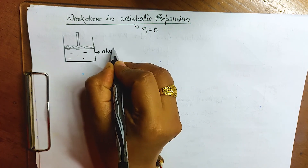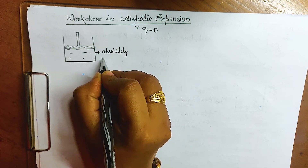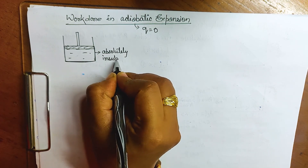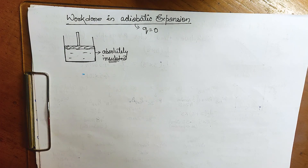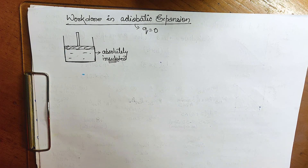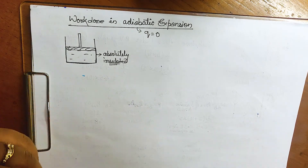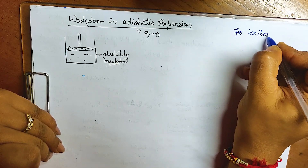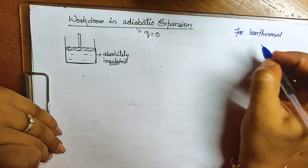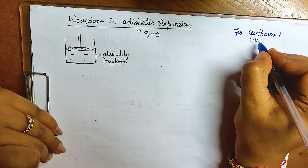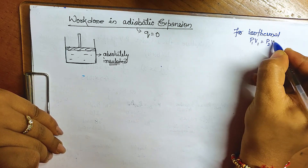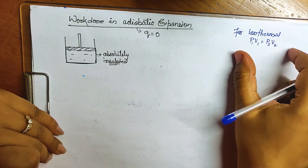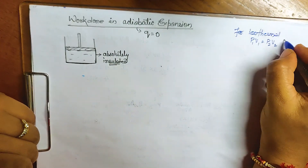We will learn in the same way as we did for isothermal. For isothermal, we used Boyle's law: p1·v1 = p2·v2. This is Boyle's law for isothermal expansion.